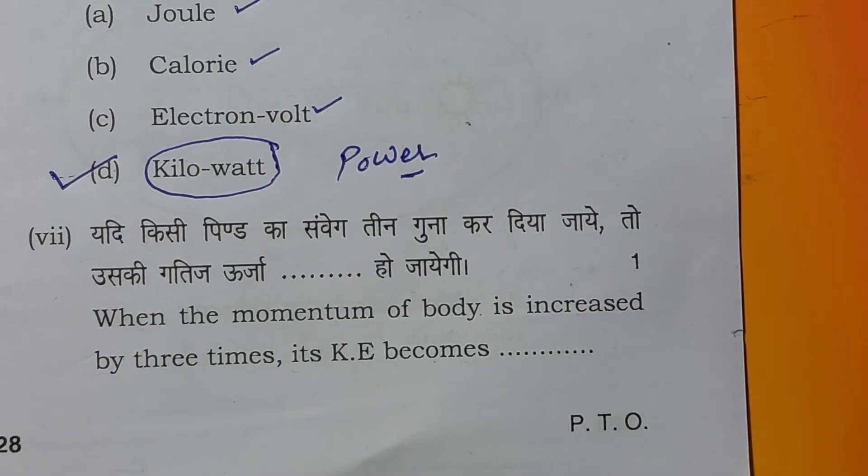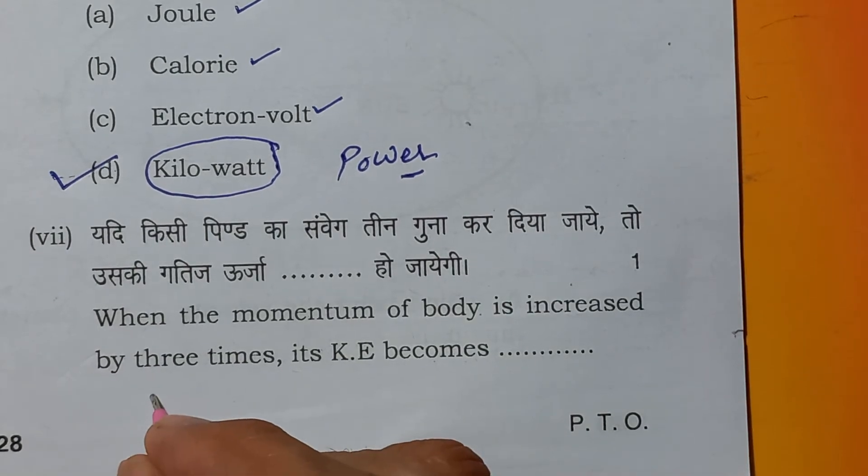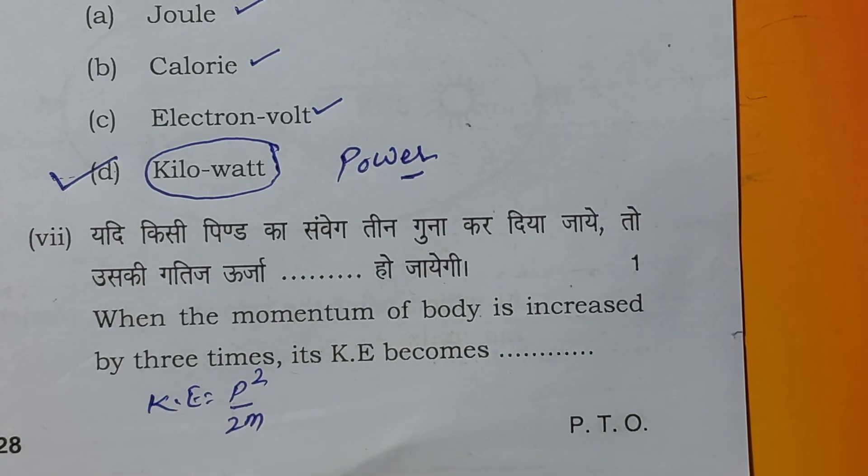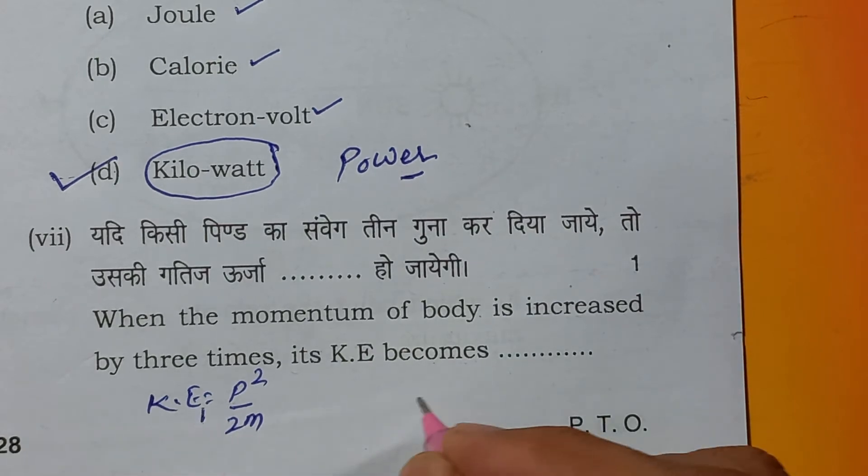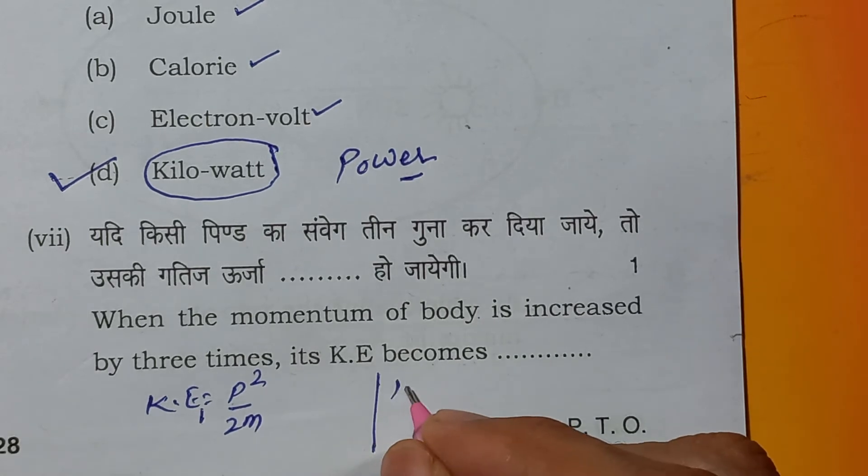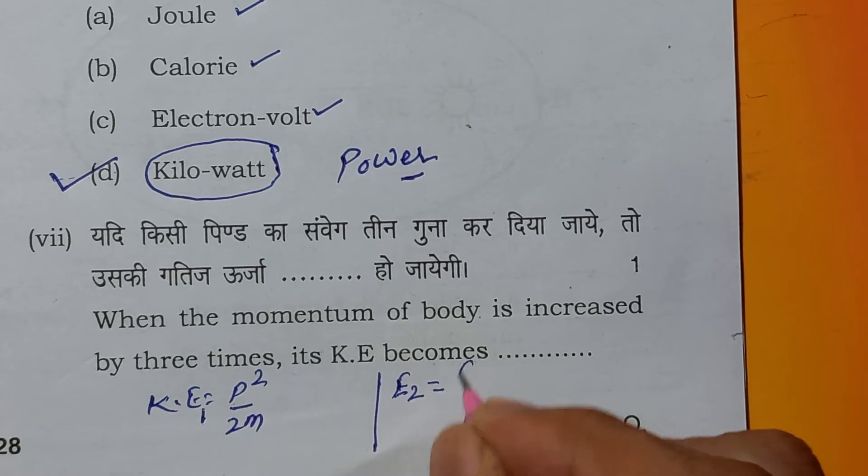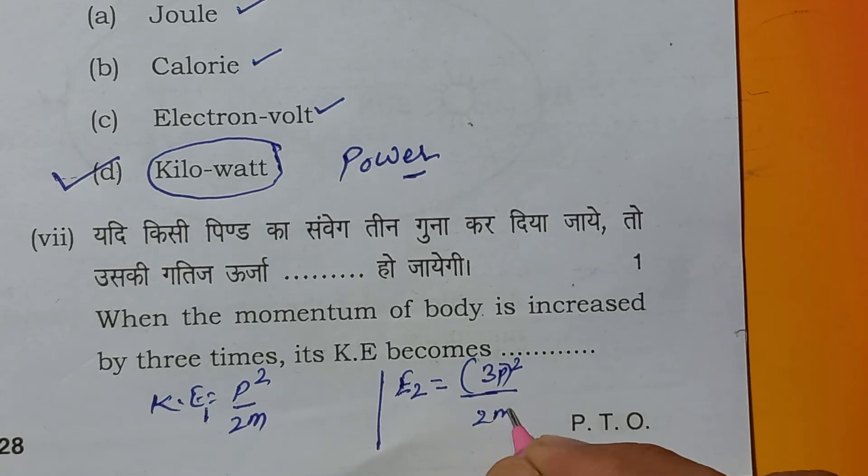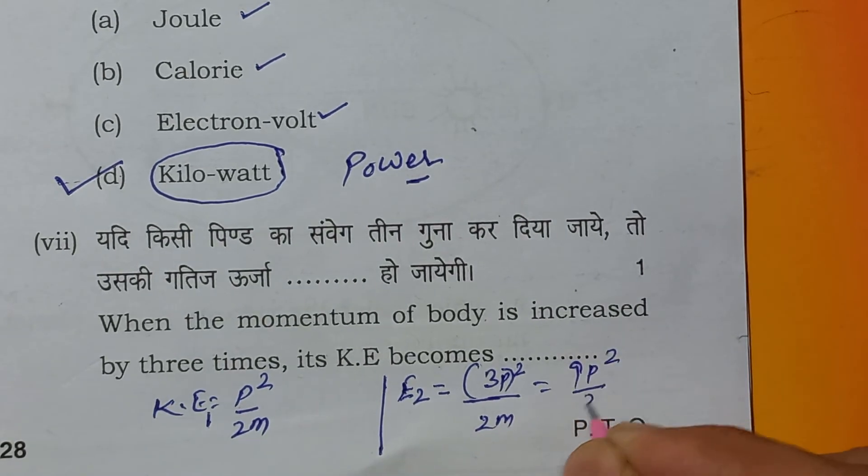When the momentum of a body is increased by three times, then its kinetic energy will be. We know that kinetic energy is equal to P square by 2M. P is linear momentum, M is mass. If it is the first case, in the second case, if momentum increases by three times, let it be E2. 3P square by 2M. That will be 9 P square by 2M.